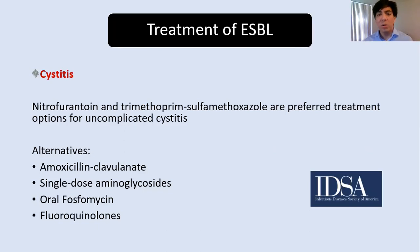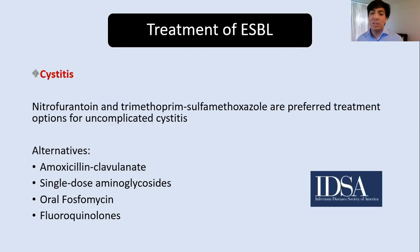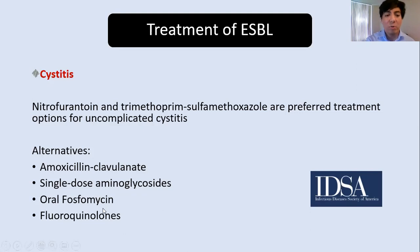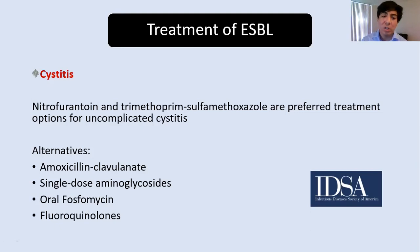For cystitis caused by ESBL-producing organisms, IDSA guidelines list nitrofurantoin and Bactrim as preferred treatments, with alternatives including augmentin (which can achieve high urinary concentrations to potentially overcome ESBL), single-dose aminoglycosides, and fosfomycin. Fosfomycin is best used in E. coli, not Klebsiella or Proteus, because those harbor the FosA gene conferring fosfomycin resistance. Fluoroquinolones are also an option if confirmed sensitive.